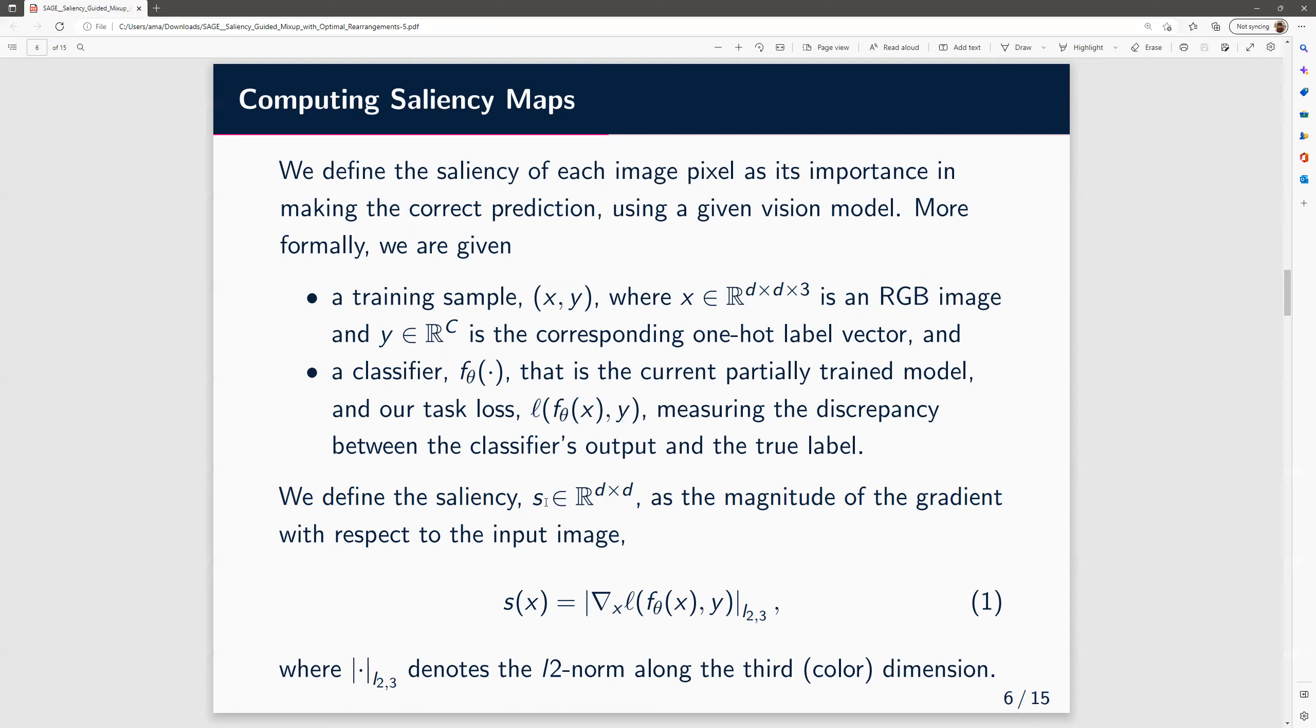Then we define saliency s as the magnitude of the gradient with respect to the input image. So we're taking the gradient, and then take L2 norm along its third dimension.